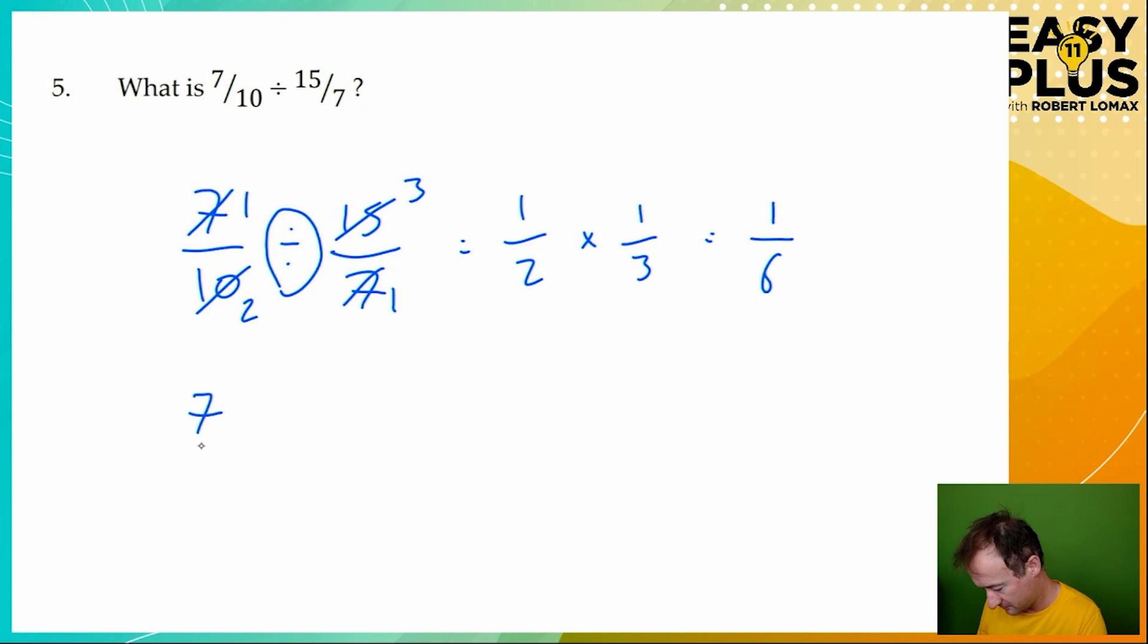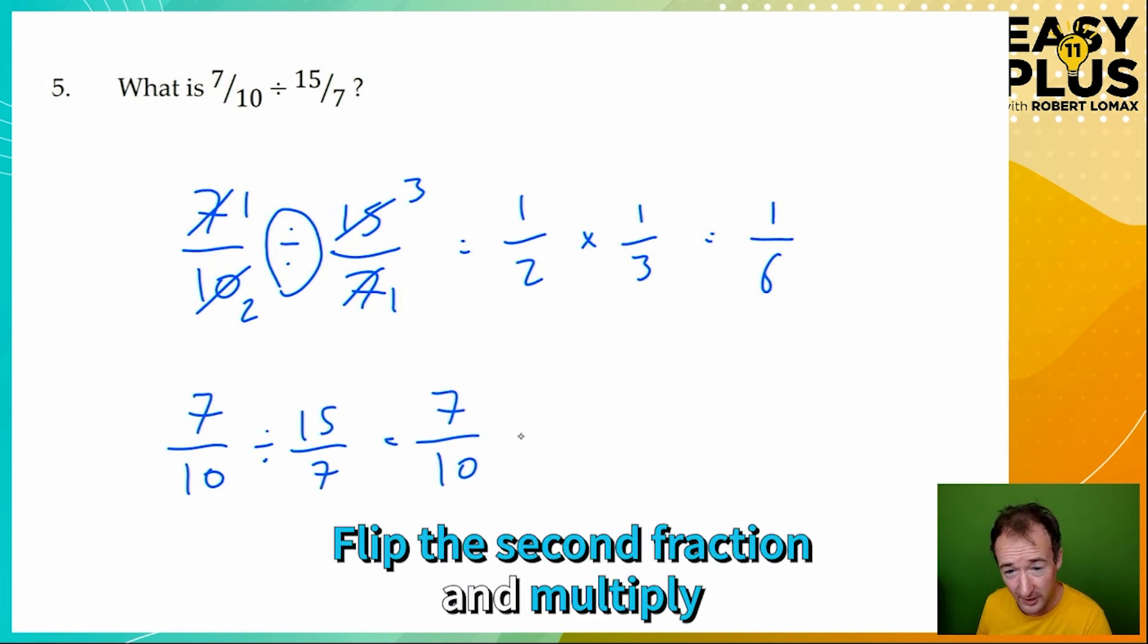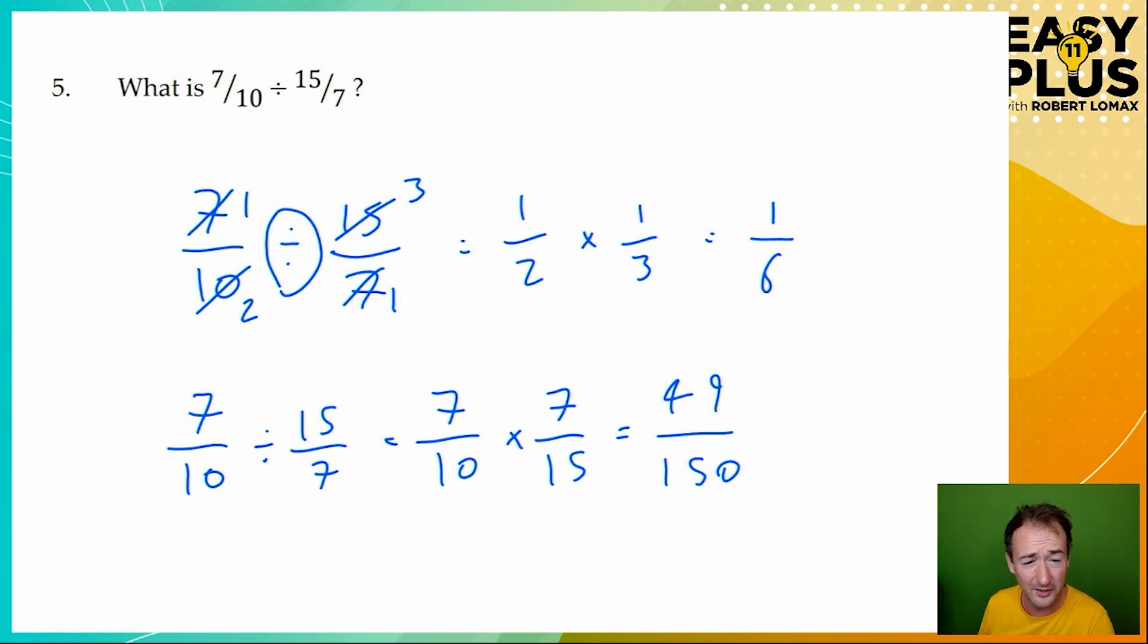What should we actually be doing? Let's start again. We leave the first fraction the same. We change the divide to a multiplication, and we flip over the second fraction. Seven times seven is forty-nine, and ten times fifteen is, of course, one hundred and fifty. The only factors of forty-nine worth talking about here are forty-nine and seven. Neither of those is a factor of a hundred and fifty, so there's no further simplification that we can do here. This is our answer.